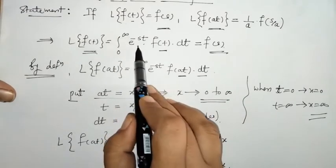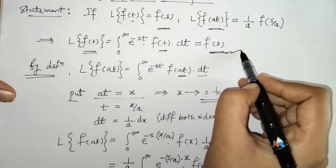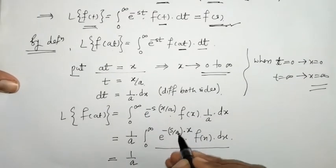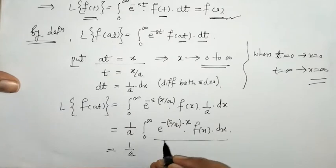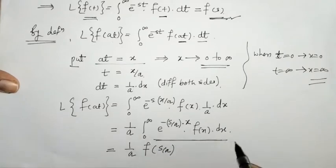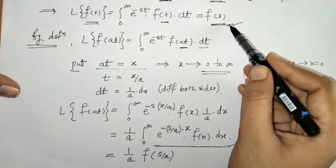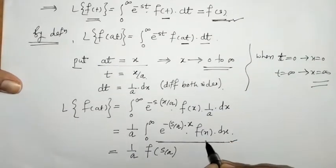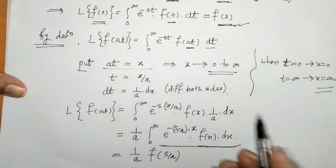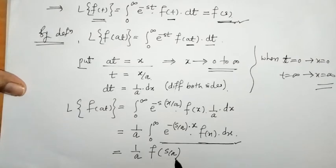We recognize that the integral from 0 to infinity of e^(−st) f(t) dt equals F(s), where s is the coefficient of t. Similarly, the integral from 0 to infinity of e^(−(s/a)x) f(x) dx equals F(s/a), since s/a is the coefficient of x. Therefore, the Laplace of f(at) equals (1/a) F(s/a).